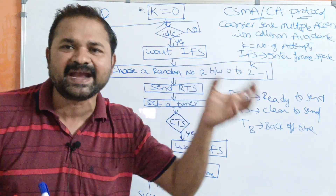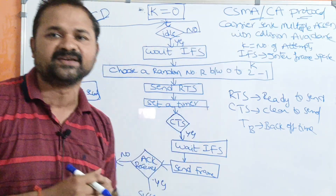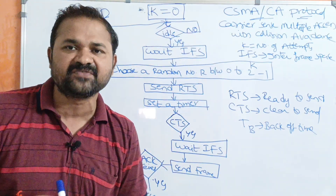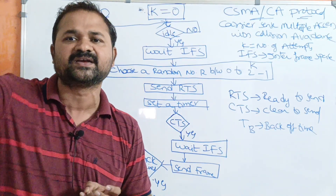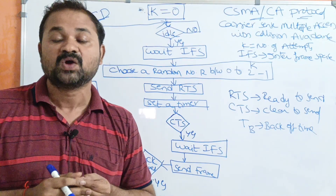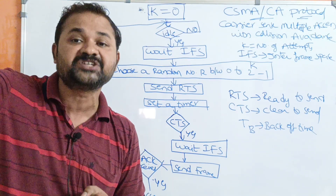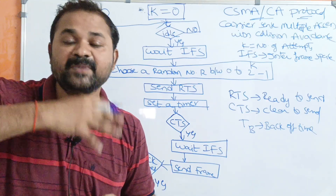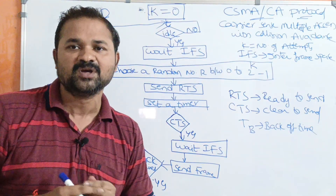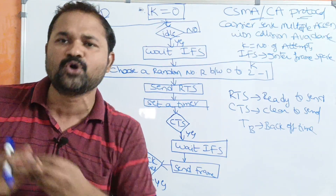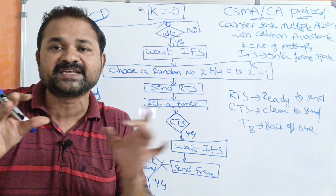IFS is a random period of time. Whenever the channel is free, the station waits for the Interframe Space. This is because there may be a possibility that during that time another station is transmitting a frame. So it waits for some more time to ensure there will be no collision. Even after IFS, the station still does not send data immediately.